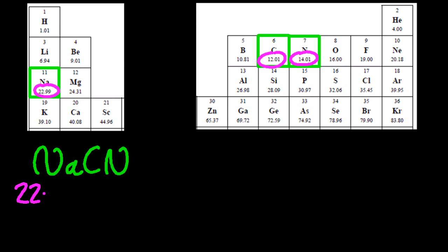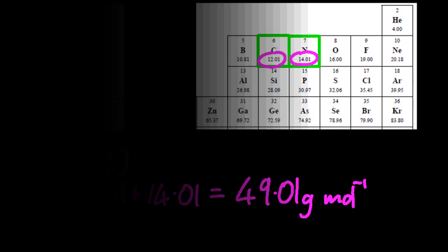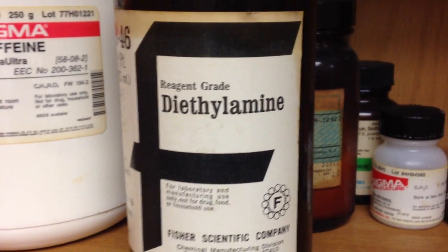Add them all up and it comes out at 49.01 grams per mole. If I have a mole of sodium cyanide, that's the mass.